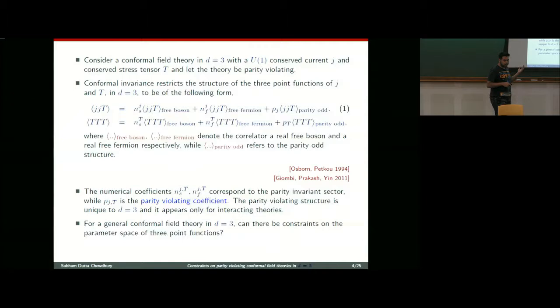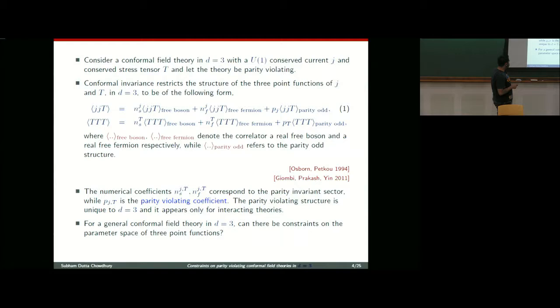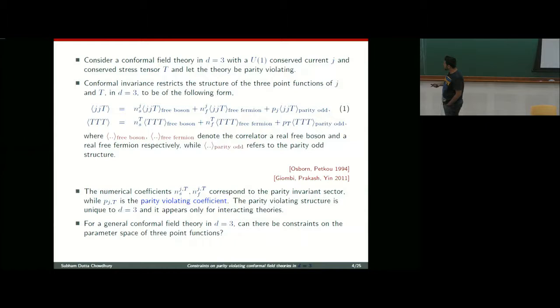The numerical coefficients Ns and Nf correspond to the parity-invariant sector, while Pj or Pt is a parity-violating coefficient. This structure is unique to D equals 3 and it appears only for interacting theories. As an example, I have written down the parity-violating structure for the JJJ current correlator.